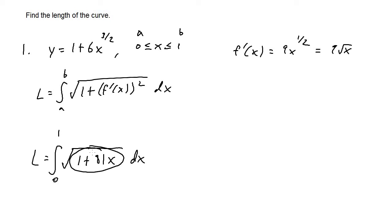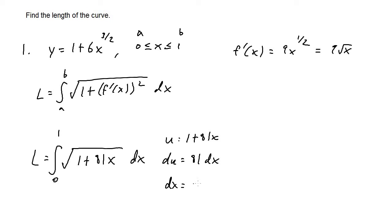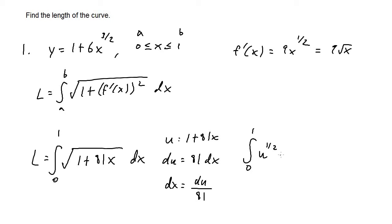To integrate this, we use u-substitution. Let u equal 1 plus 81x, so du equals 81 dx, which means dx equals du over 81. Substituting back in, we get the integral from 0 to 1 of the square root of u times du over 81. The 1 over 81 comes outside as a constant, giving us 1 over 81 times the integral from 0 to 1 of u to the 1 half, du.